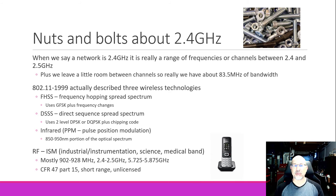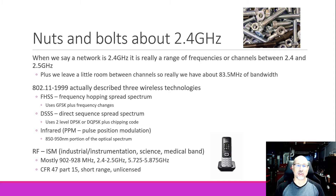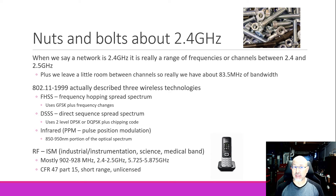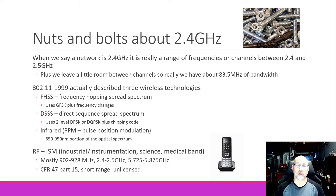Frequency hopping spread spectrum does frequency shift keying, hops to another channel, does another burst of data, and jumps around again — we had something called a hopping sequence. Direct sequence spread spectrum uses five megahertz channels; you're assigned to that channel and stay there. It used differential phase shift keying — another modulation technique — with something called a chipping code. The optical wireless standard was in the infrared band, 850 to 950 nanometers, different from the IrDA port on laptops, and used pulse position modulation for light pulses.